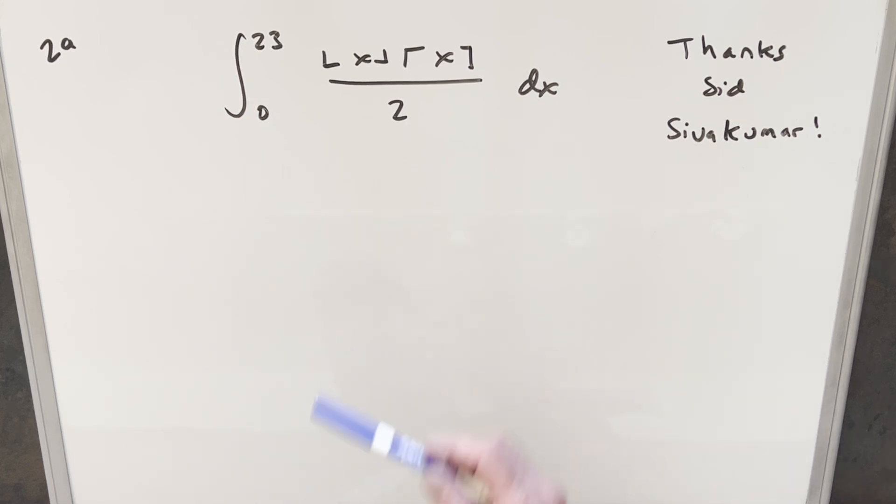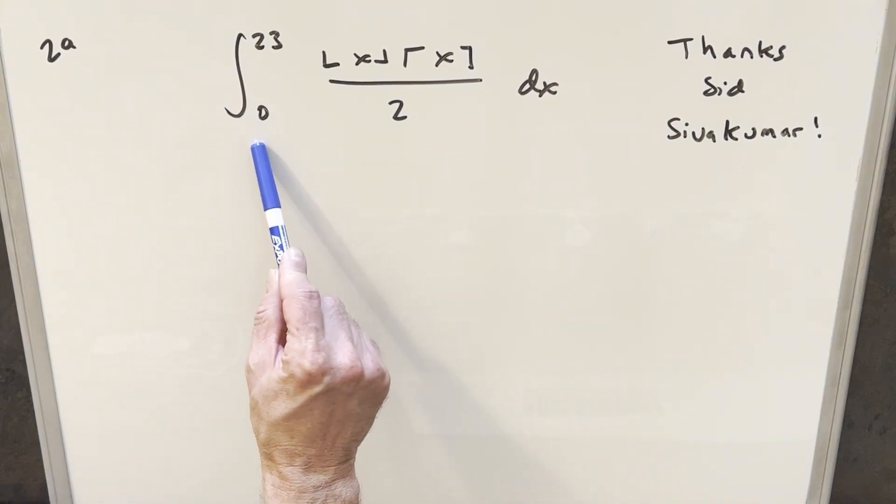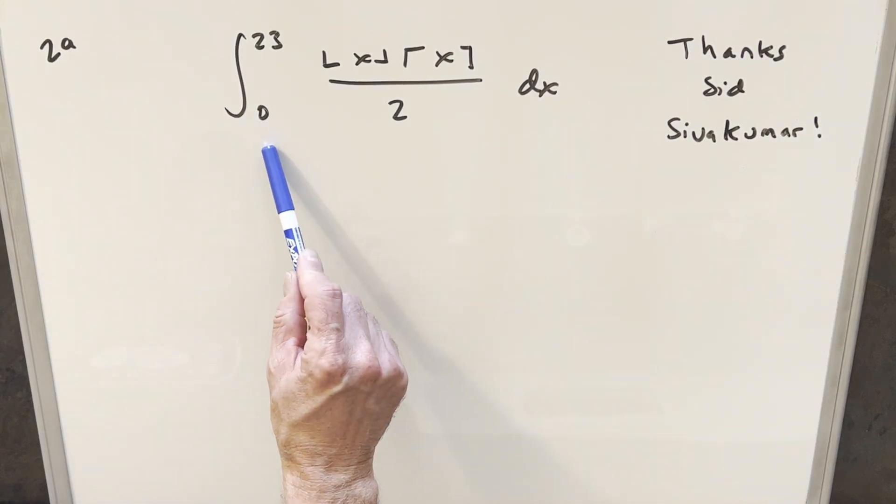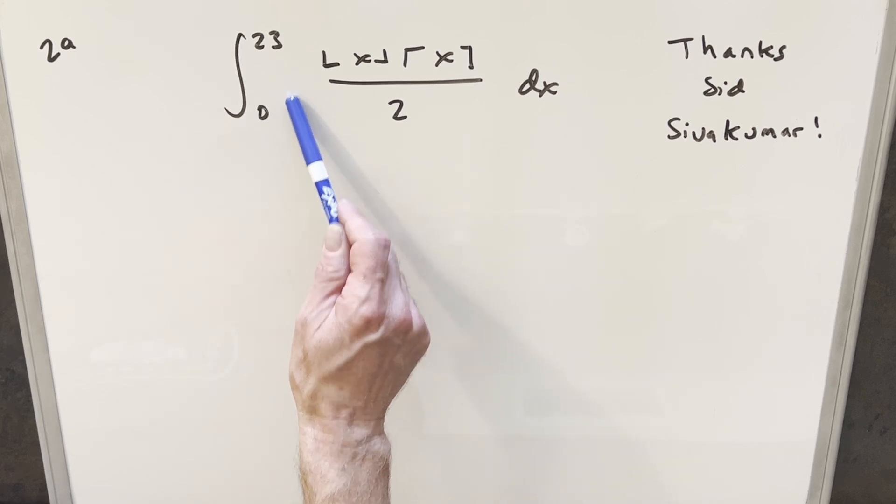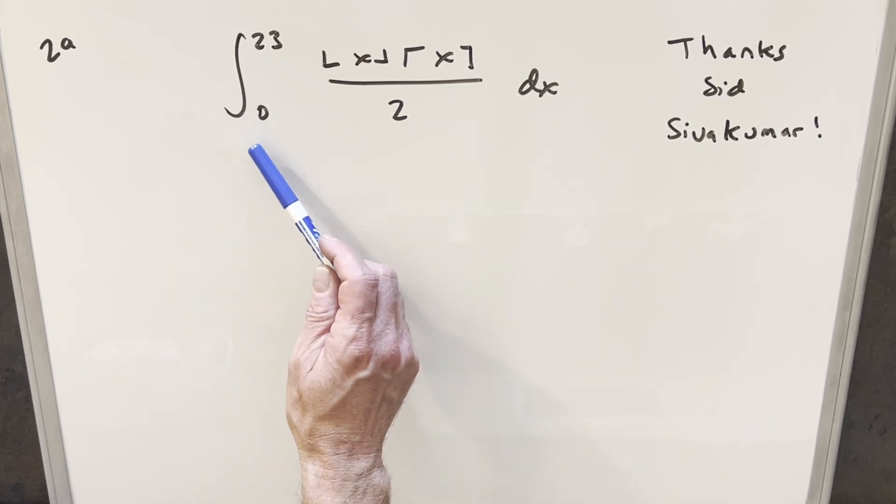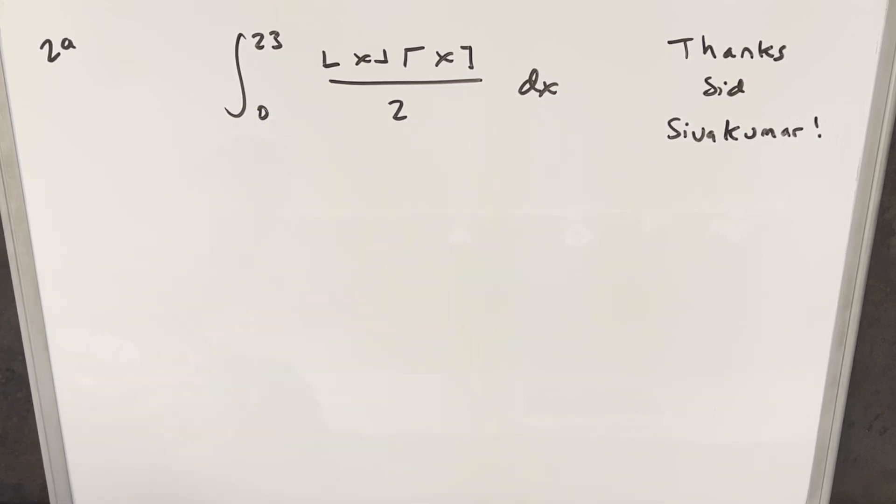Whenever we have the floor and the ceiling, that's usually what we want to deal with first. The way I like to do this usually is split this up on integer bounds. We're not going to infinity or anything, so we're just going to have a finite number of integrals, like 23 or 24 integrals.